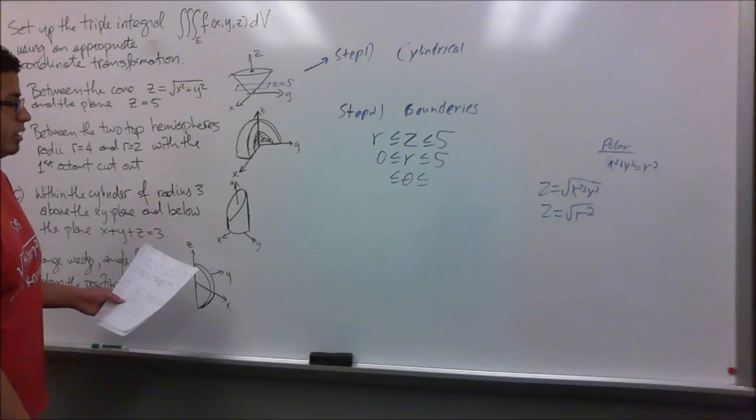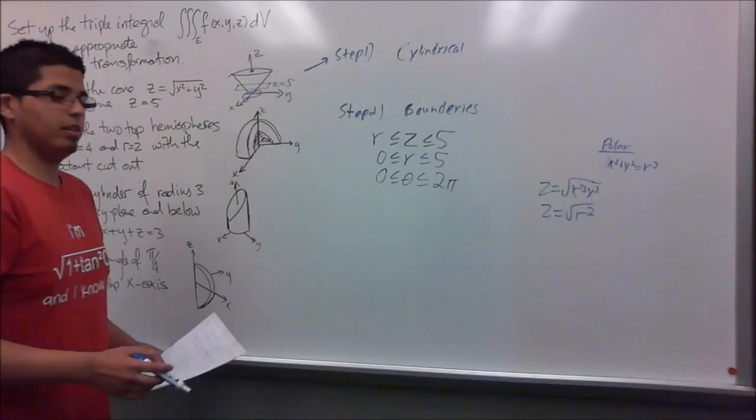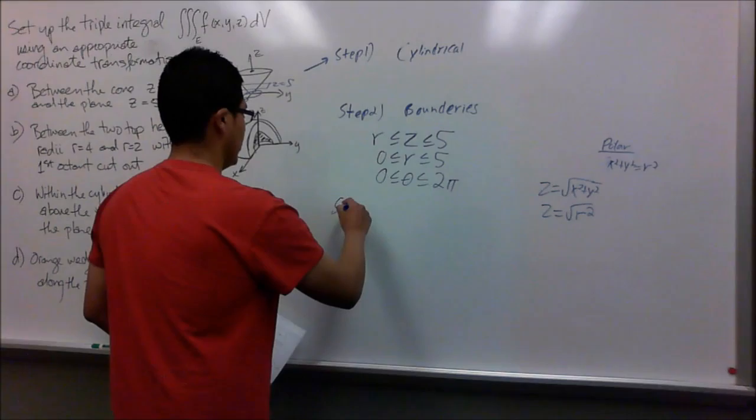For the radius, we look at the bottom which starts at zero and goes up to where the plane intersects, which is 5. Since the solid goes all the way around the xy-plane, our theta goes from zero all the way to 2 pi. Those are our boundaries for this solid.